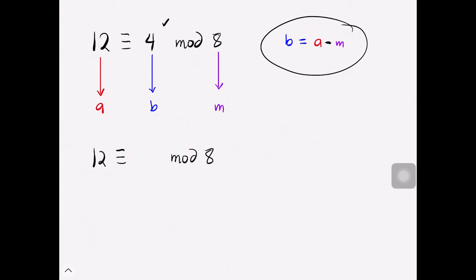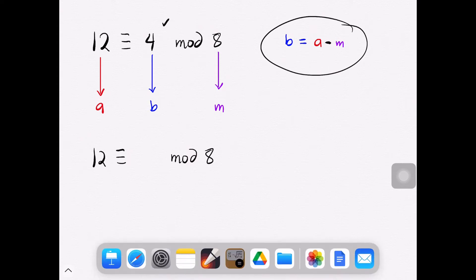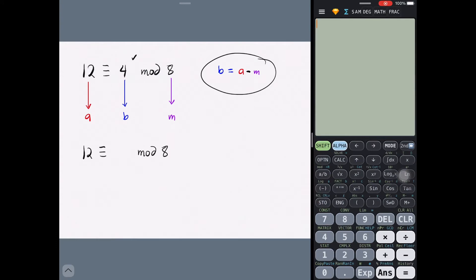Now, notice that from that 4 as their answer, if we keep on subtracting 8 from the recent answer, these numbers would still be congruent to 12. Observe by definition, this would really be true because 8 divides 12 minus negative 12, which is a positive 24, and so as 12 minus negative 20, which is a positive 32.